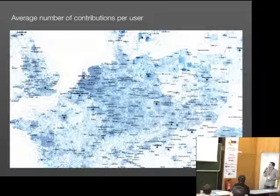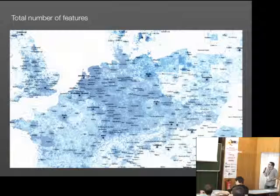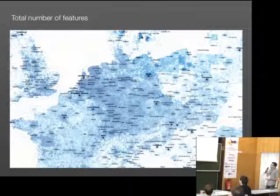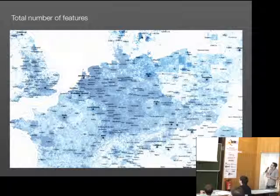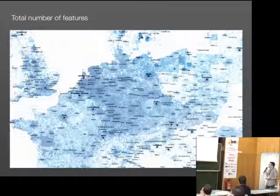The number of features may indicate some sort of completeness of data. Again in Germany and the Netherlands we have very large numbers, but as we can see in Poland there's a different image, which we will look at later. In Hungary, we have very low numbers of features, so one can guess that there's a lot of mapping still to be done.